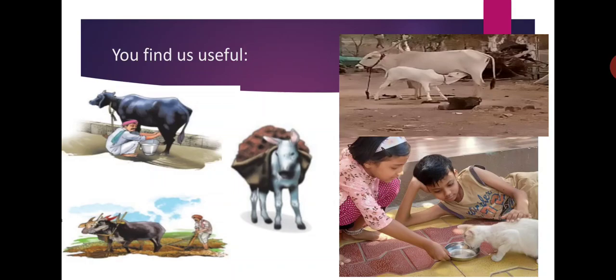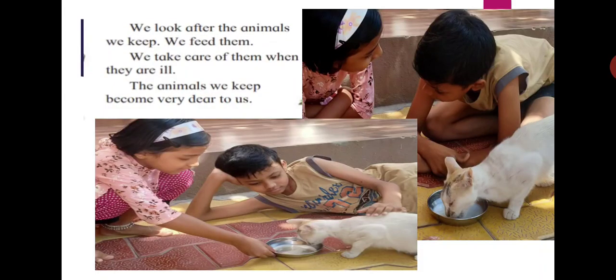People love to keep animals. The dog guards our house. People like to keep cats, cows, and buffalos — cows and buffalos give us milk. Some people keep hens; we get meat, milk, and eggs from animals. Bullocks help with farm work, and hitched to a cart they can draw heavy loads. Horses and donkeys are used to carry burdens. We look after the animals we keep — we feed them and take care of them when they are ill. The animals we keep become very dear to us.